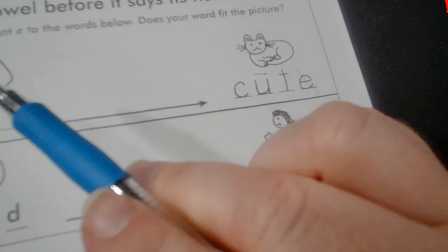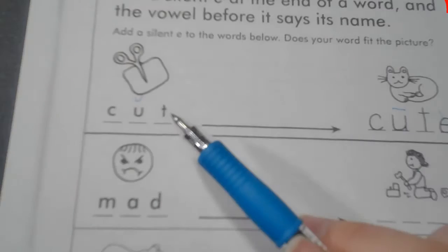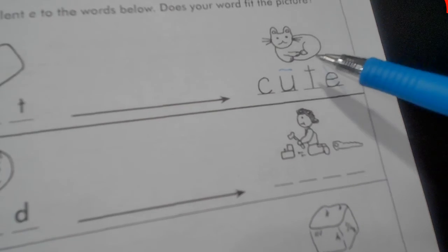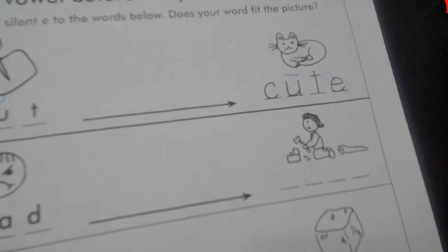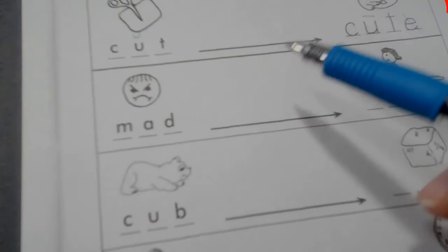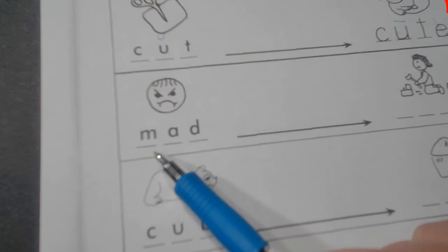So we are going to say the word with a short vowel and then say it with a long vowel with an E at the end. The E is silent. So we're going to say this, mad.